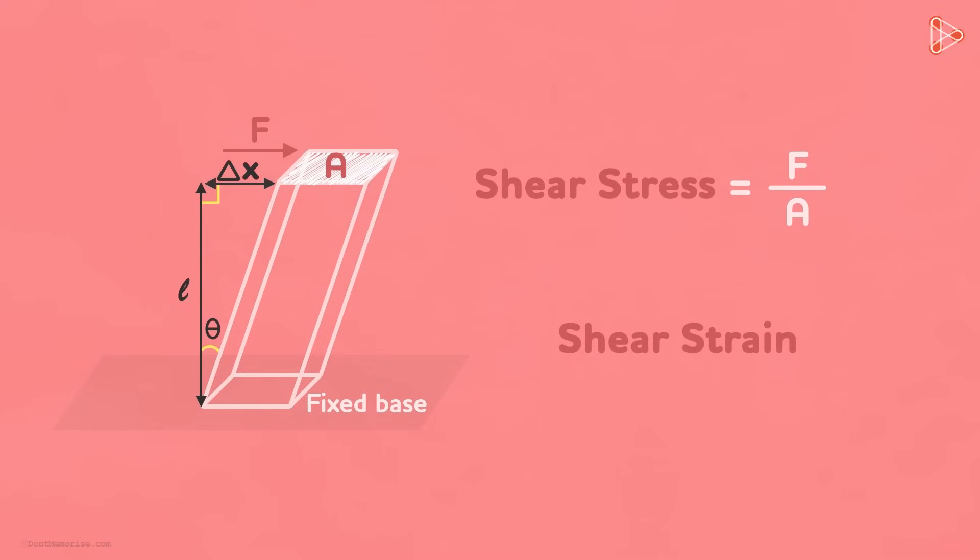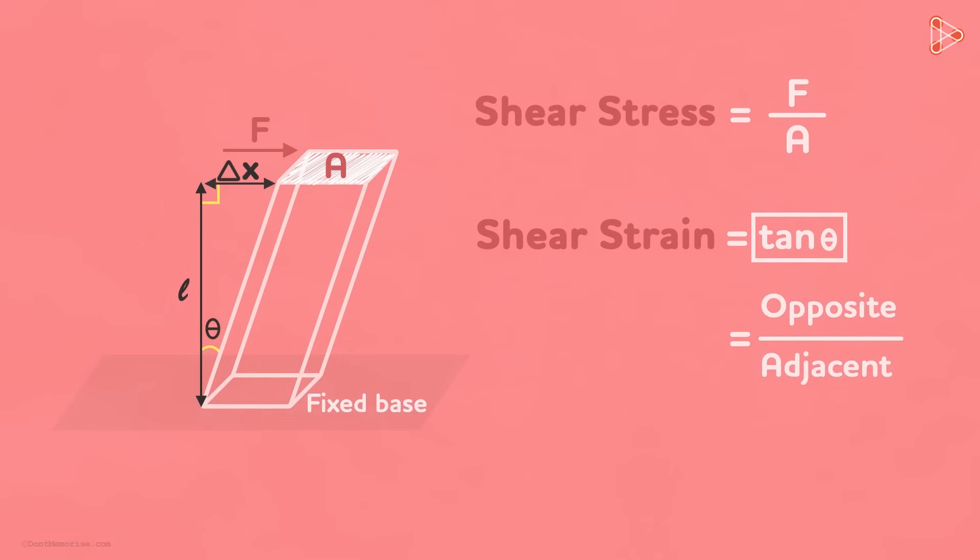Shear strain is simply equal to tangent of Theta. Yes, shear strain is simply the tangent of this angle. But what is tan Theta? We know that it is the opposite side over the adjacent side.